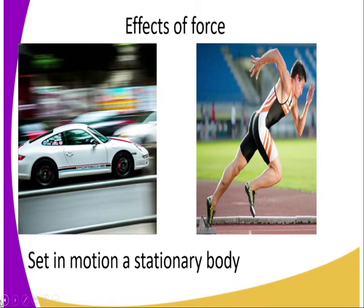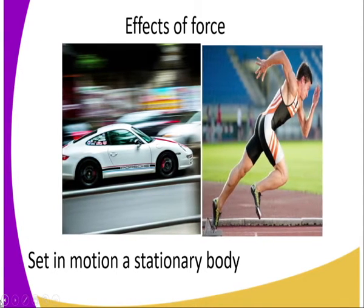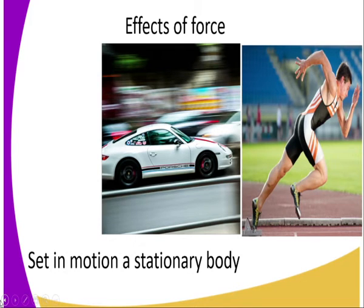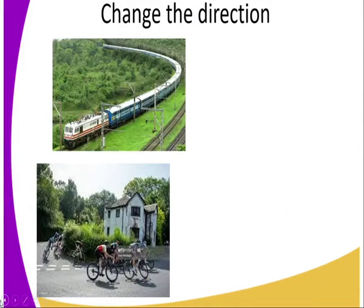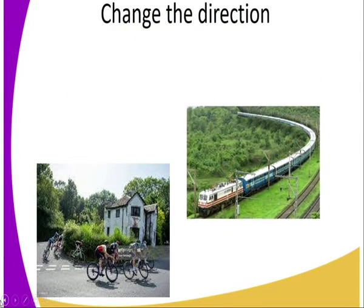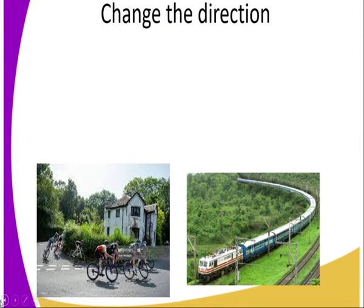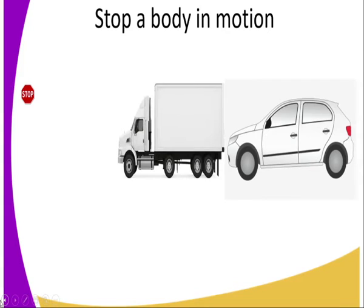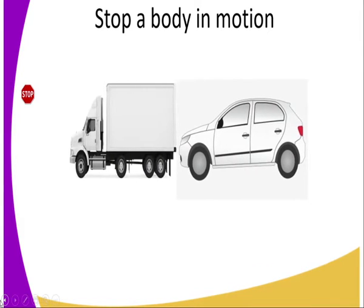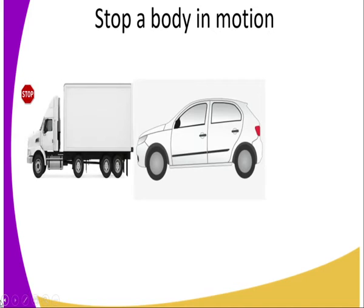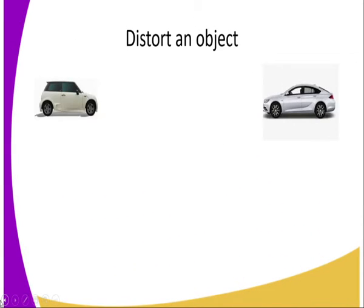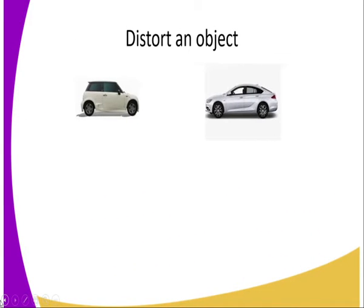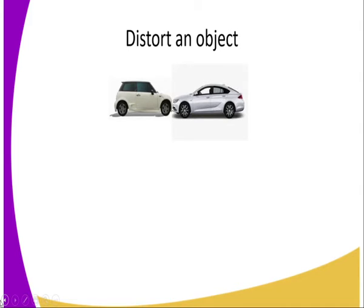When force is applied to objects or bodies it has the following effects. Number one, it can cause motion — it can set in motion a stationary body. A force can also change the direction of a body in motion. Once a body has been set in motion, the direction can also be changed. For a body in motion to come to a stop, force is also applied, so force can stop a body in motion.